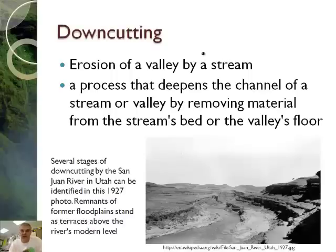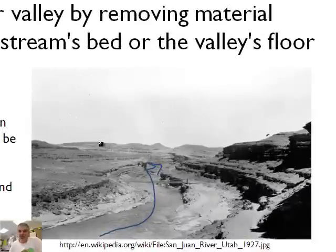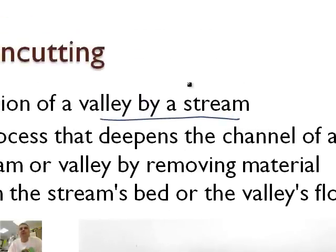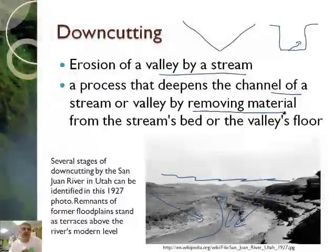A couple of other important words. Downcutting is the erosion of a valley by a stream. As a river goes through, if you look at the picture here — this is the San Juan River in Utah — it has cut down. The river used to be up here, and the land used to be up here, but the river has cut this valley. Valleys tend to be V-shaped when they get cut. That's what we saw here with Fountain Creek. Sometimes they can be more cliff-shaped, like the Grand Canyon. But most of the time they're V-shaped.